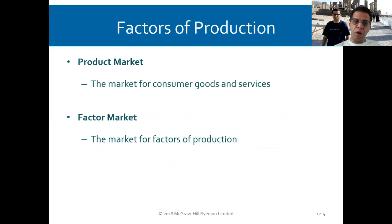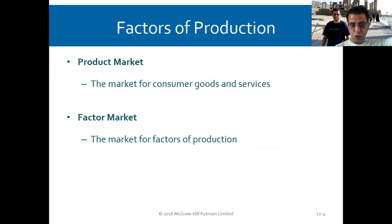What's a product market? The market for consumers, consumer goods, and services — that's a product market. The factor market is the market for factors of production. So factors of production are goods that are used for production, and labor is also part of the factor market.